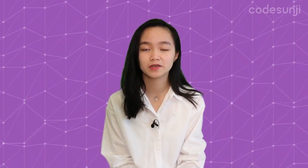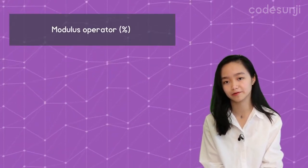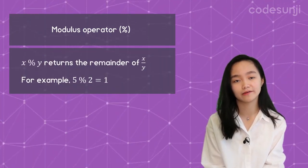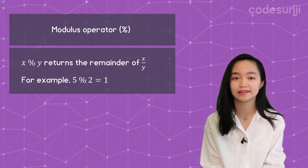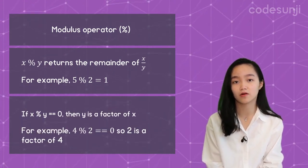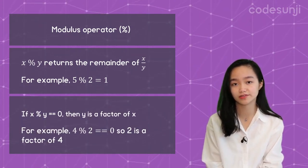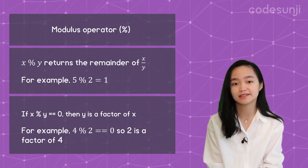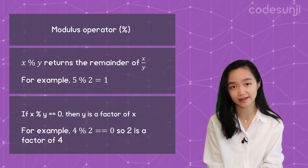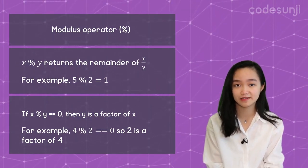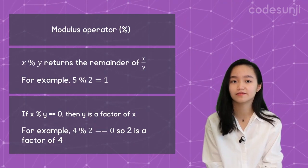Side note: to check if a number is divisible by another, we use the modulus operator, which is typically the percentage symbol. x modulus y returns the remainder when we divide x by y. So if the modulus operation returns 0 — no remainder, like 4 modulus 2 — that means x is divisible by y, and y is a factor of x. Through this, we can infer that 2 is a factor of 4.